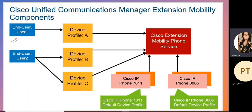Here we can see that there is end user one, for which we have created a device profile A and extension mobility is enabled for that user. We can also create two or more profiles for the same user. For user two, there is a device profile B and device profile C, both with extension mobility enabled. This user can log in using either profile. We can set different configurations for the two device profiles — for example, one for a 7811 phone and another for an 8865 — and associate both profiles to the same user.